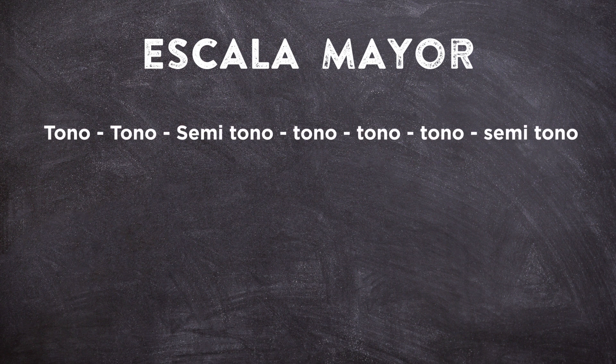Ahora vamos a conocer la estructura de una escala mayor. Una escala mayor está conformada por tono, tono, semitono, tono, tono, tono y semitono — o en números: 1, 1, ½, 1, 1, 1 y ½. Una de las escalas principales, o la escala modelo, sería la escala de do mayor, que es donde se cumple esta regla.